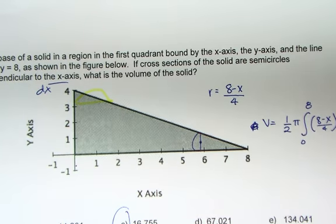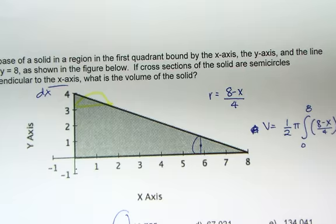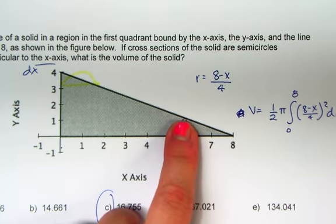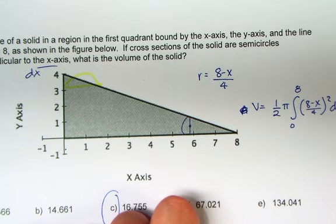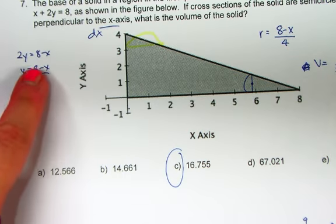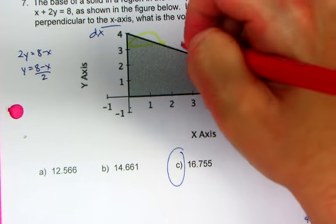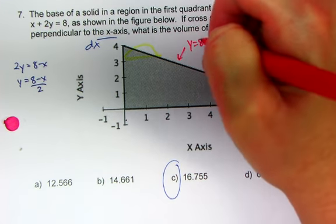7 is cross-sections. You've got these little semicircles embedded. So remember that your radius is 8 minus x over 4, because your diameter, the whole distance, because this function is y equals 8 minus x over 2, that's the actual function.